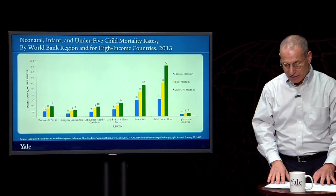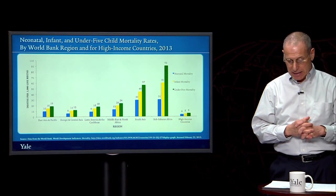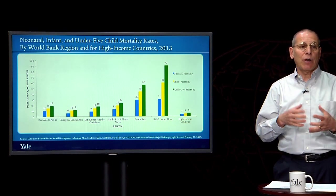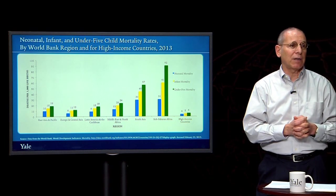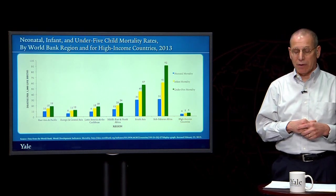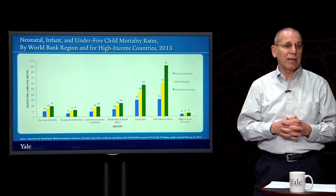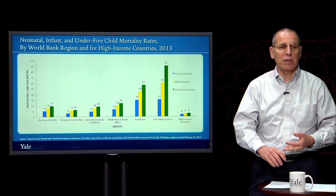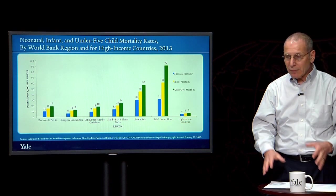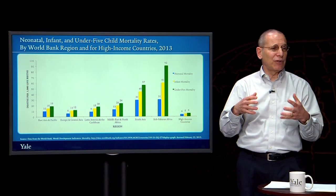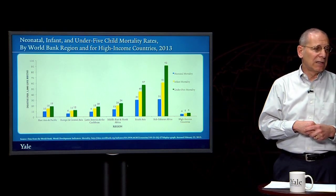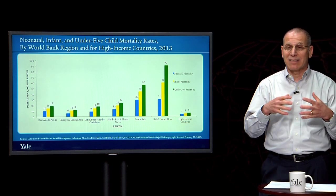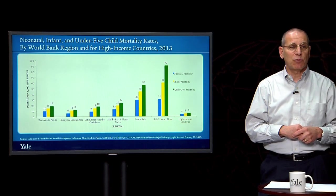Hopefully by now you have a better understanding of key health indicators, some important progress in improving global health, and some important parts of the unfinished agenda. You know that sub-Saharan Africa and South Asia lag much of the rest of the world. You've seen how health indicators play out for life expectancy, maternal mortality, neonatal mortality, infant mortality, and under-five child mortality. You also understand when it's useful to use averages and when one needs to focus on differences not only across countries but within countries as well. In the next session, we're going to speak about the links between demography and health.